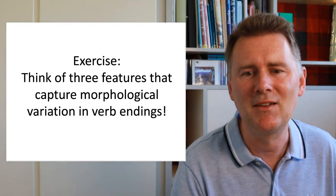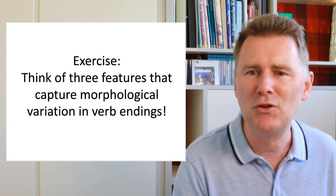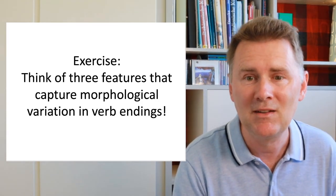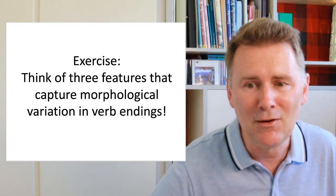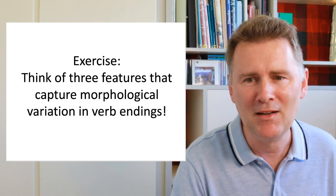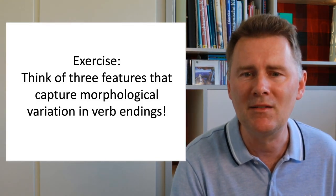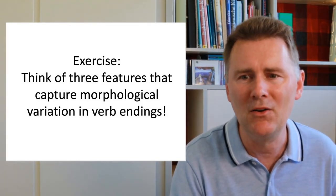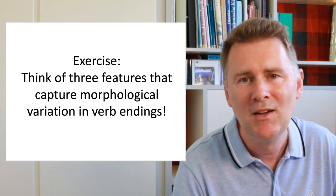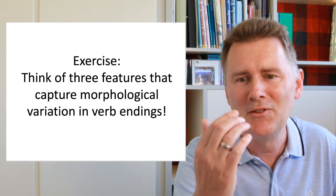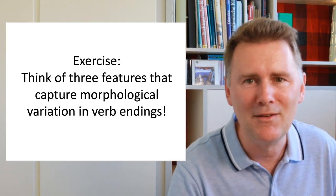Let's do a little exercise. I'd like you to pause this video and think of three features that capture morphological variation in verb endings. What features do you expect to find in the E-Wave with regard to morphological variation in verb endings? What do you think the E-Wave compilers included in their overview? Take five minutes or so and try to come up with possible features, then continue with the video and we'll compare notes.